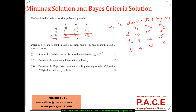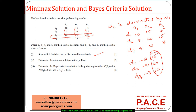Determine the minimax solution to the problem. What is my maximum loss if I go with D1? Maximum loss is 15. If I go with D2, maximum loss is 20. If I go with D4, maximum loss is 23. The minimum of these maximum losses is 15. So the better strategy is to go with D1 under the minimax criteria.